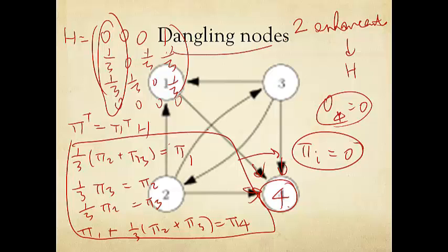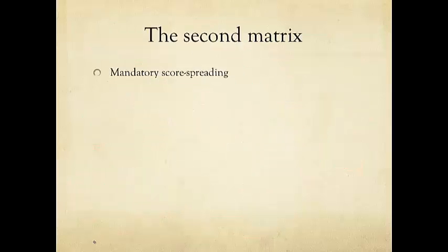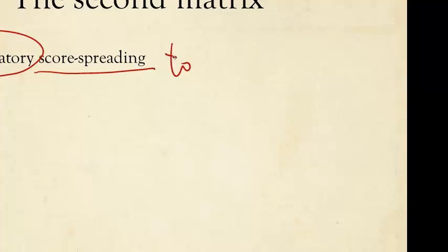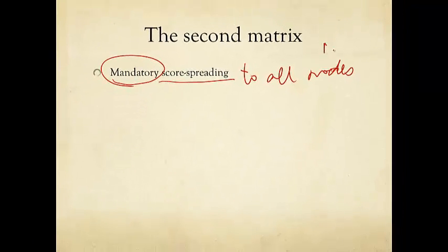So how can we solve this dangling node problem? We refer to nodes with out-degree zero as dangling nodes. One possible solution is to say: since you don't point to any other nodes, I will assume that you point to all nodes. I will force a mandatory score spreading — you have to spread your importance score, and since you don't tell me which ones you point to, I'll say you point to all nodes, either all n minus 1 nodes or, for simplicity, all n nodes including yourself with a self-loop.